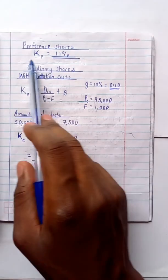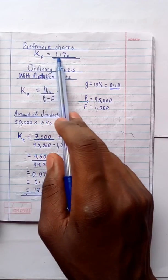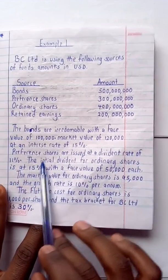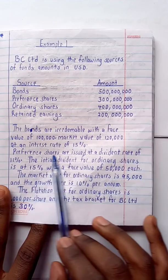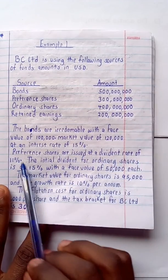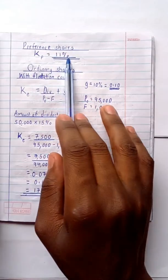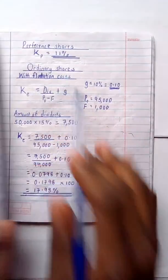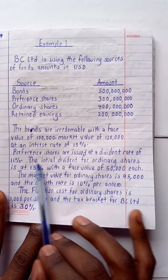For the preference shares, the cost of preference shares is already given in the question. The preference shares are issued at a dividend rate of 11%, so the cost of preference shares is 11%.